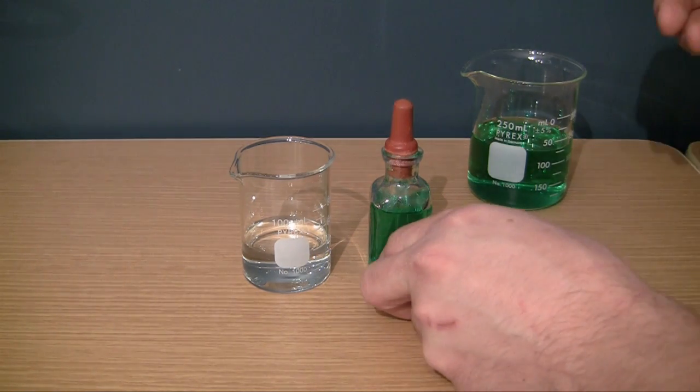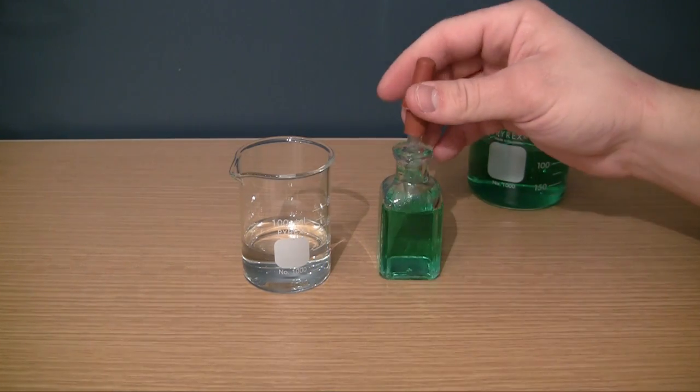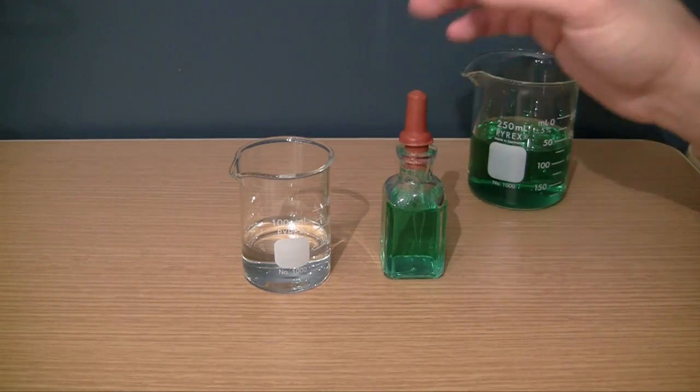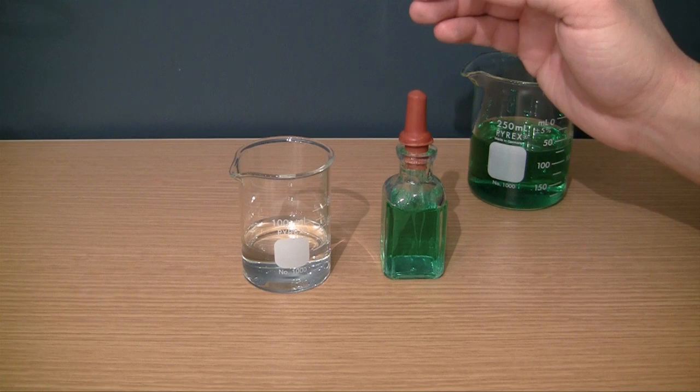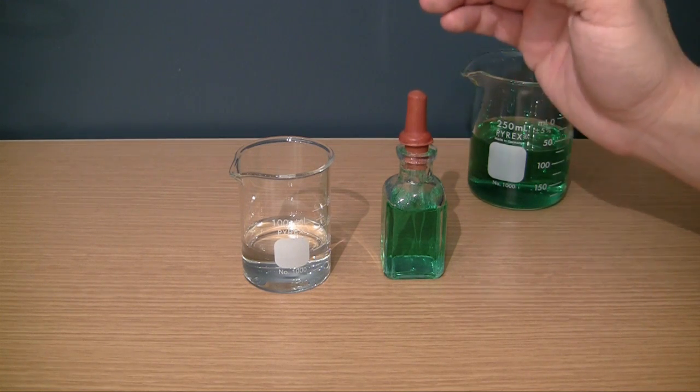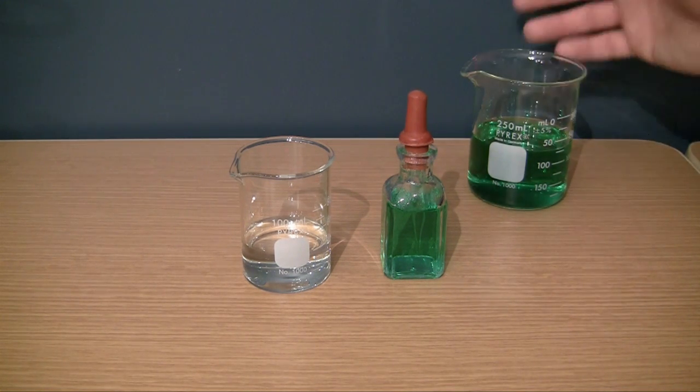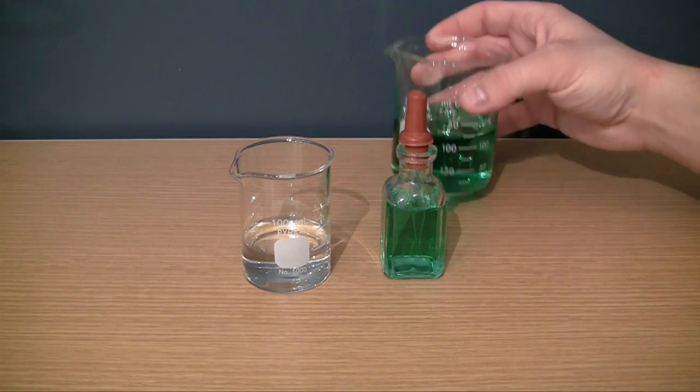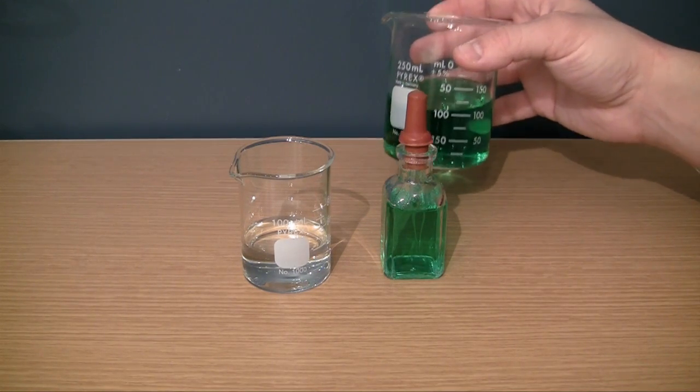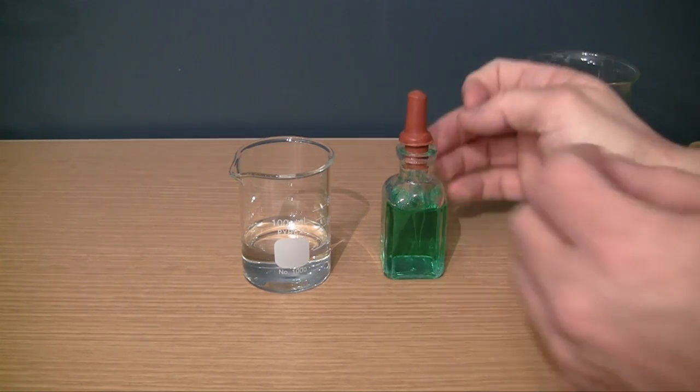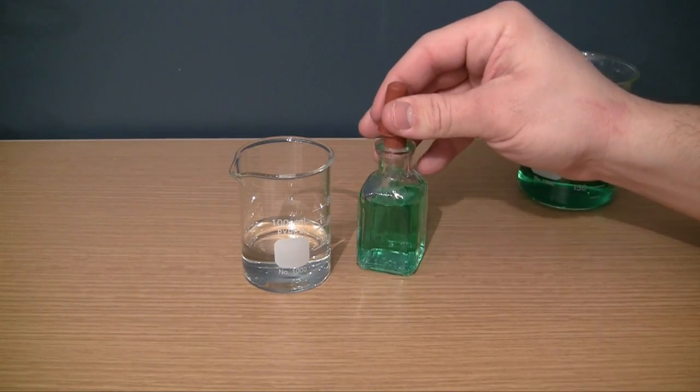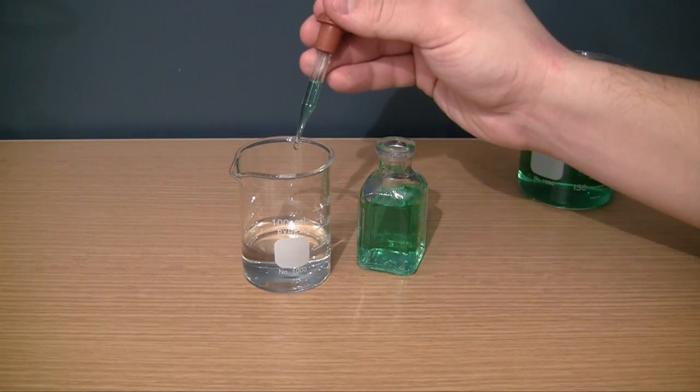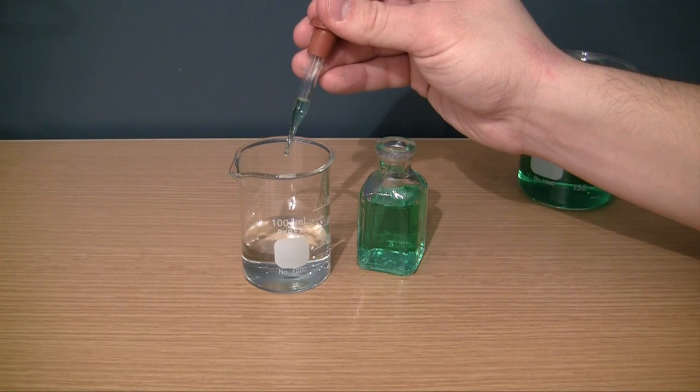But basically what it is is a container that you use to store chemicals but only the chemicals that you want to use in very precise amounts, aka drops. Whenever you want to deliver like 200 milliliters at a time it's better to use a beaker but whenever you're working with very precise measurements and you need to deliver it in drops then check it out. Pretty freaking handy.